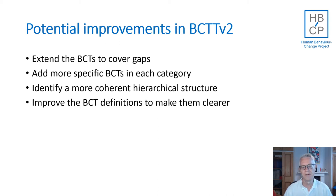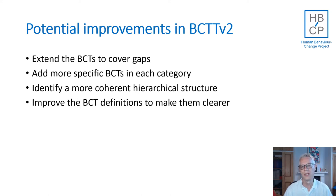A third potential area for improvement is in the hierarchical structure of the BCTs. The existing upper level provides quite a good guide to help navigate the 93-item list, but not all the BCTs fit well under their headings. Finally, we're working on the definitions to make them clearer and more what we call ontologically coherent, meaning expressing the properties of the BCTs in a way that makes the definitions better suited for use in what are called ontologies.